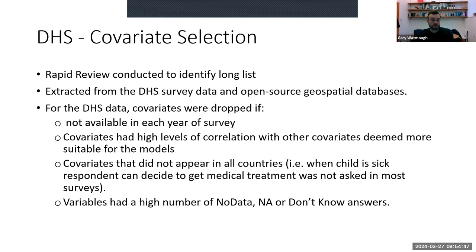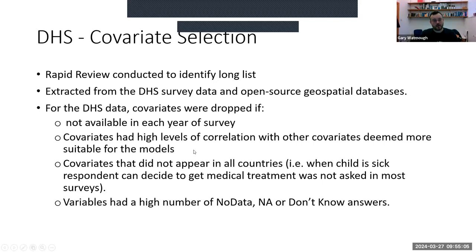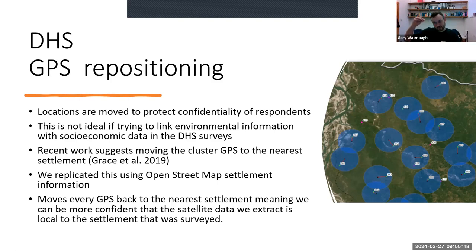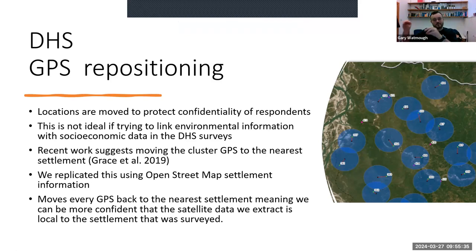Covariates with high levels of correlation with other covariates — multicollinearity — were dropped. If two variables were both related to wasting but also highly correlated with each other, we kept the one with higher correlation to wasting and dropped the other. Variables not appearing in all countries or with a high number of missing values were also dropped. Regarding GPS: the DHS does have a GPS point for each village, but it has been repositioned for security reasons. We ran models using both the original GPS points and repositioned points moved back to the most likely settlement location, and experimented with both approaches.